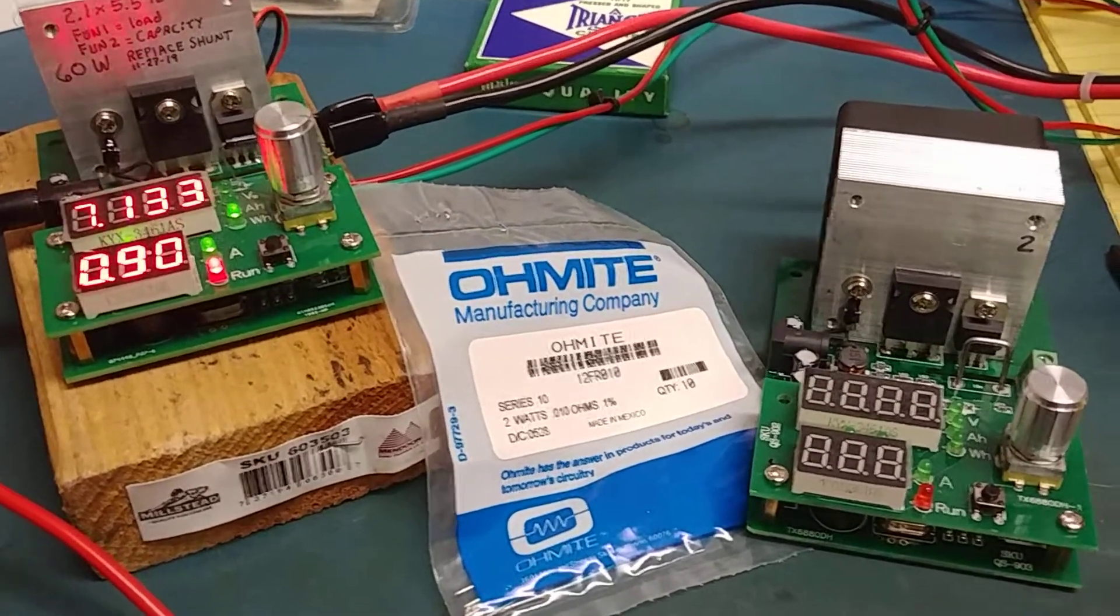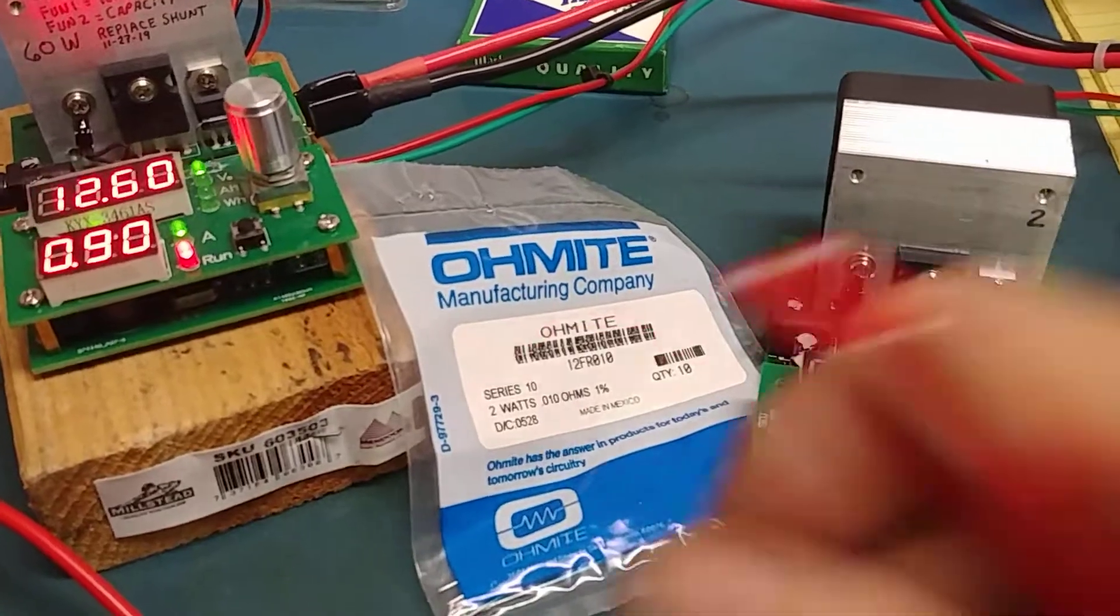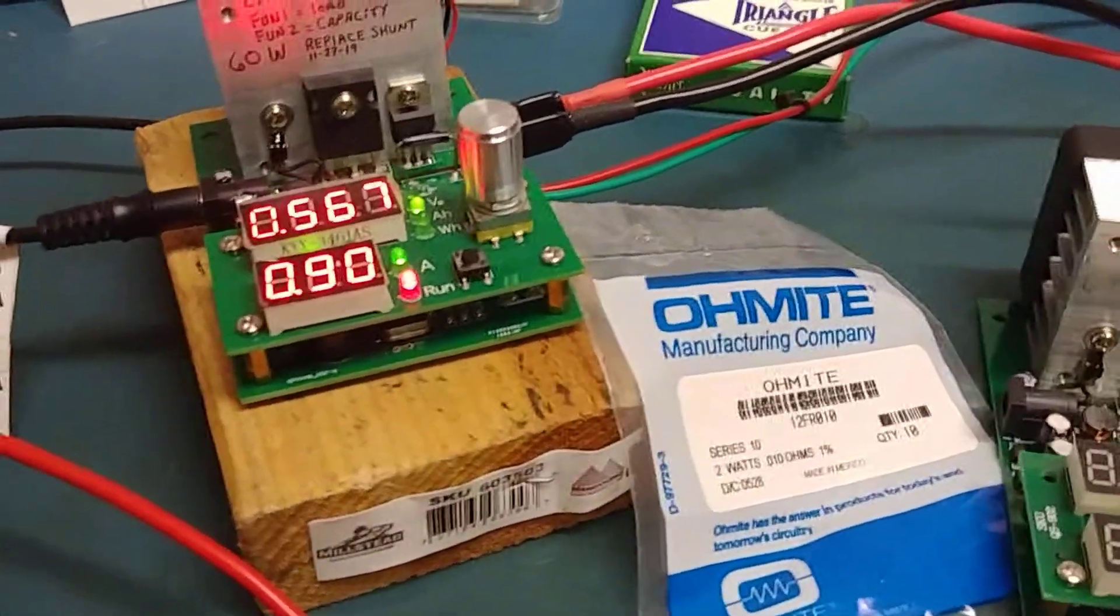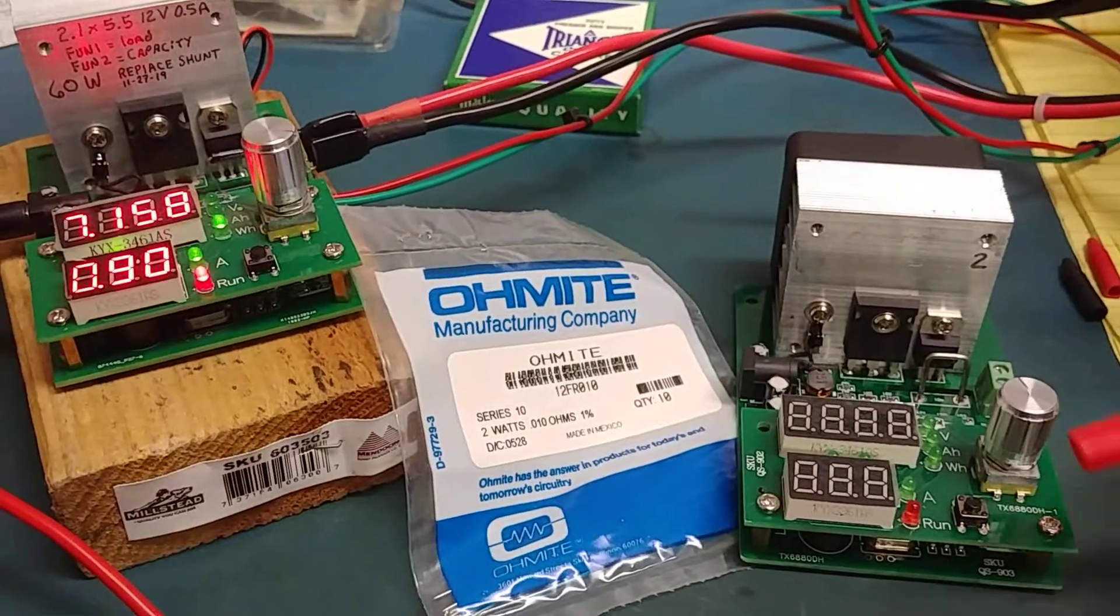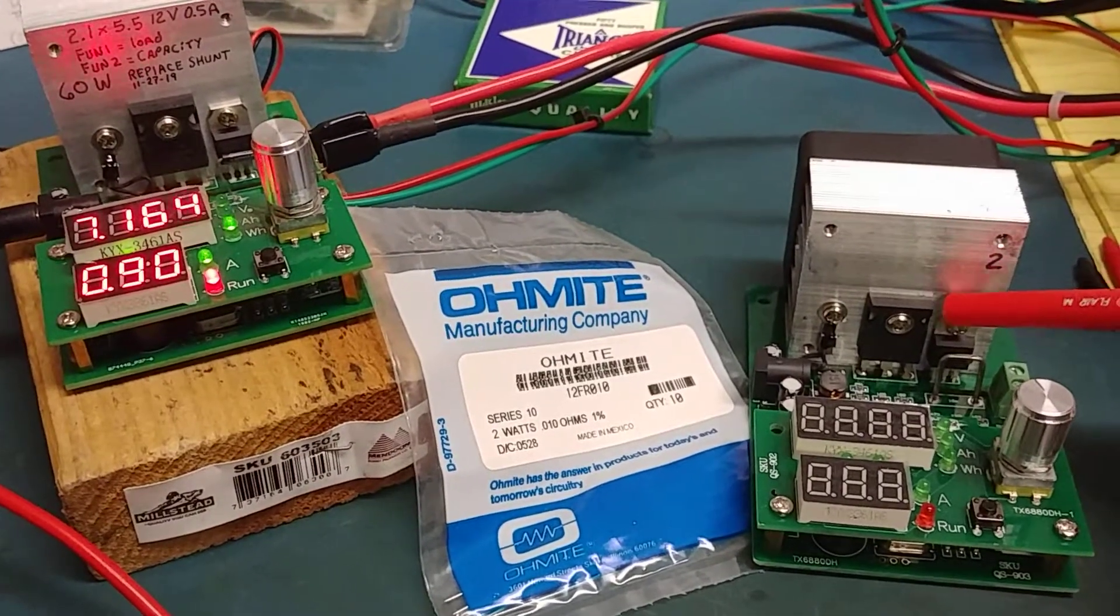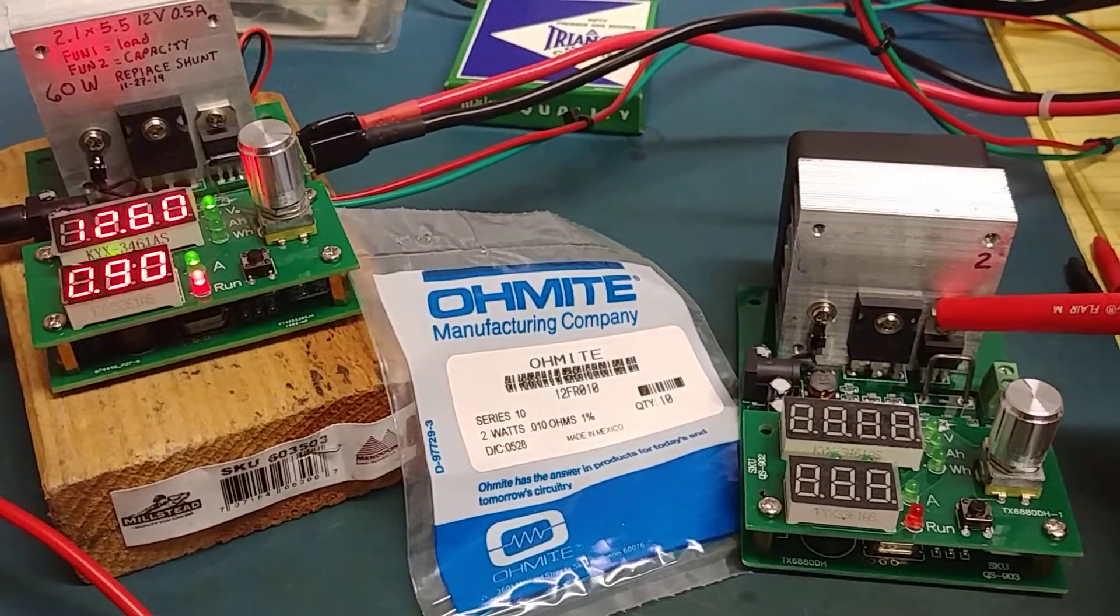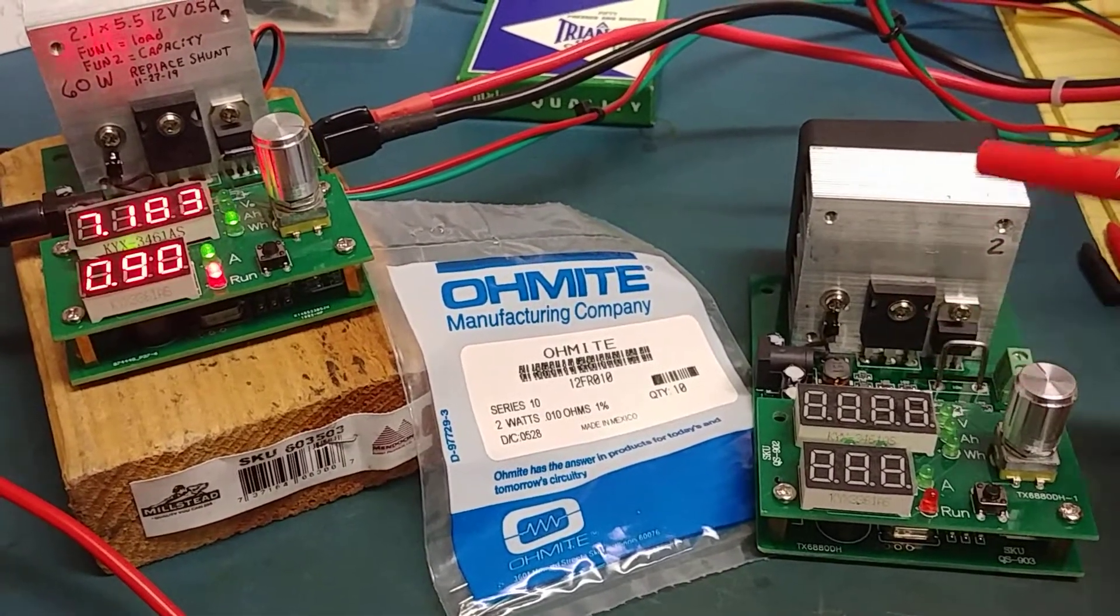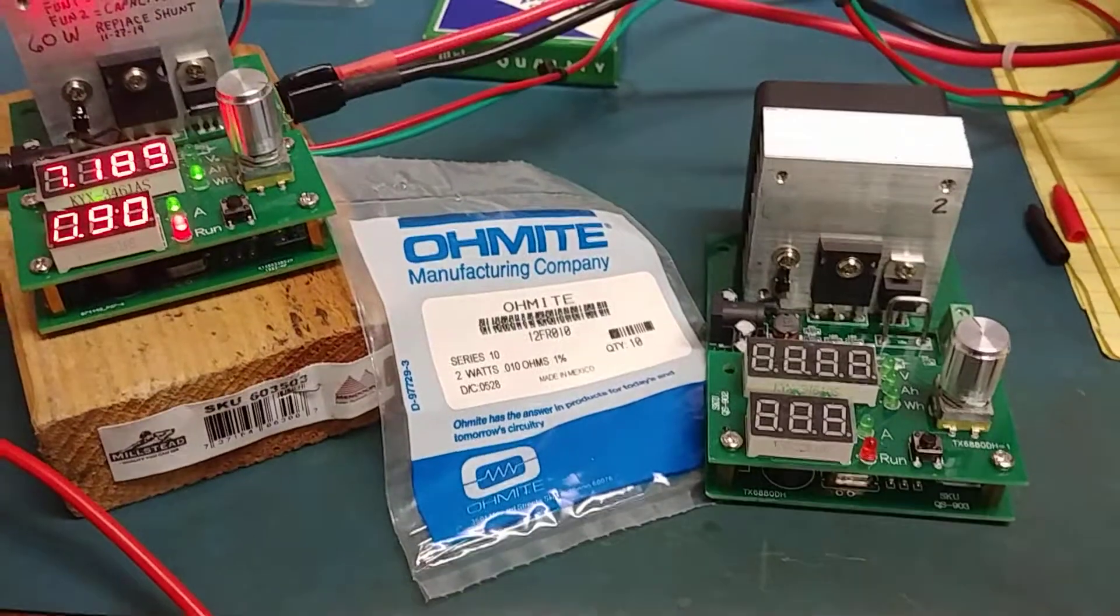Very cool. For $15, it's adjustable. If you want to know more about these, just look up constant current battery tester 60 watts on eBay. These things pop up all over the place for $16 to $25.